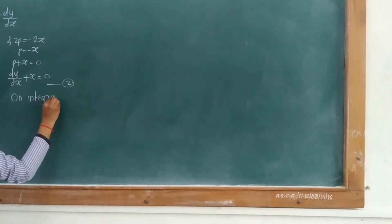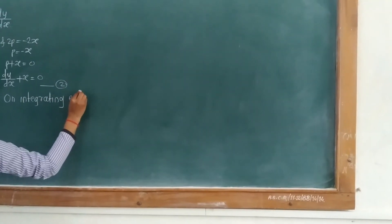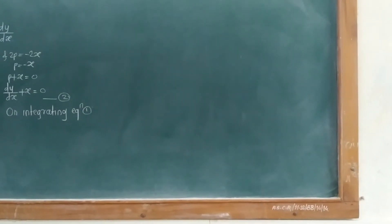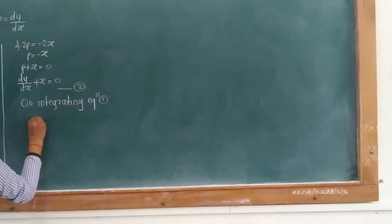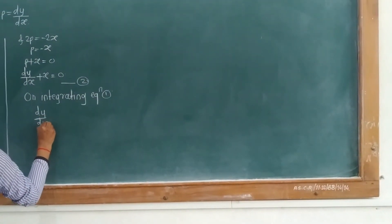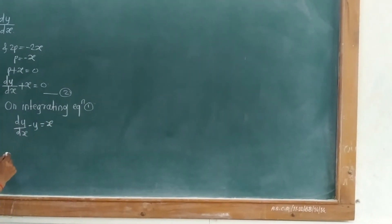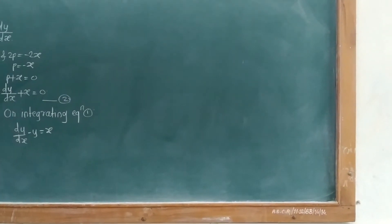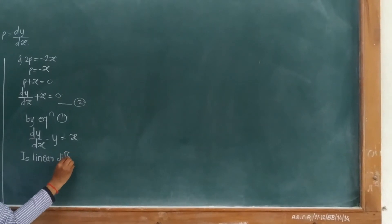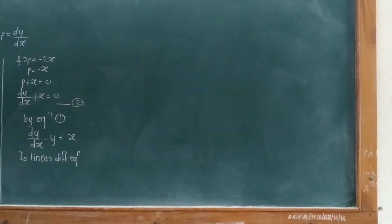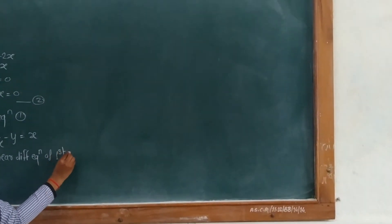Integrating equation 1: dy/dx minus y equals x, which is a linear differential equation of first order. Its integrating factor is e raised to the integration of minus 1 dx, and the integral of minus 1 with respect to x is minus x. Therefore the integrating factor is e raised to minus x, which equals 1 over e raised to x.